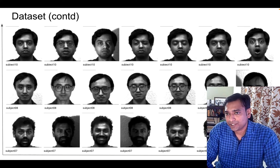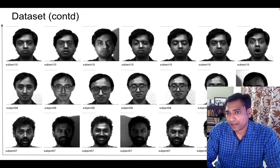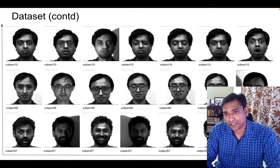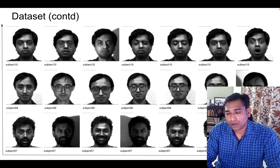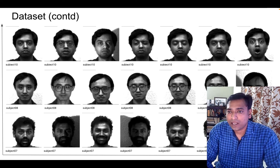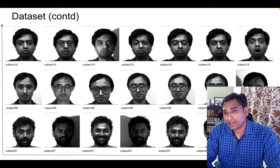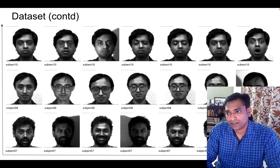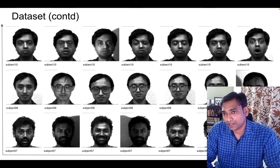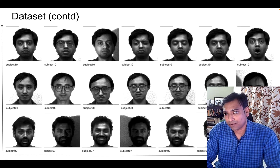Each subject is numbered from 0 to 15 and we are going to use 10 subjects, each of those subjects having 10 to 11 different expressions. The job is basically to use this dataset to create a model and then supply a face image which is unknown, to see how best it recognizes or makes a prediction about the subject.